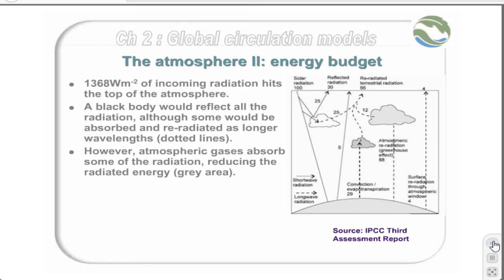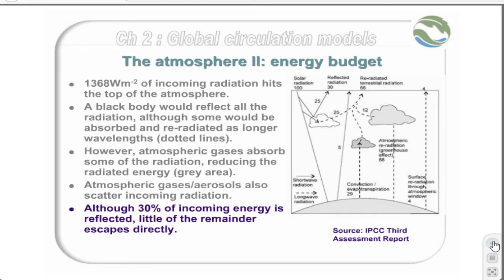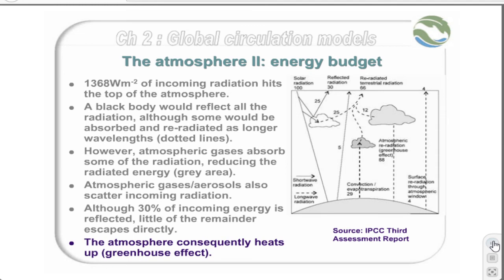The atmospheric gases and aerosols also scatter much of the incoming radiation, reducing the amount that actually hits the Earth. This diagram shows the energy fluxes within the atmosphere. Notice that although 30% of incoming radiation is reflected directly into space, only 4% of long-wave radiation from the surface leaves the planet. The remainder is absorbed by the atmosphere, and either reabsorbed by the ground or by atmospheric gases. Eventually this energy is lost to space, but the net effect over time is to increase the energy near the surface of the planet, until an equilibrium is reached.